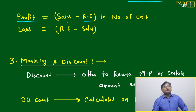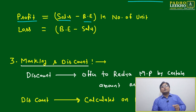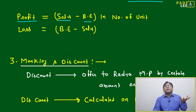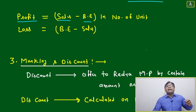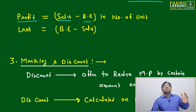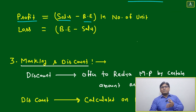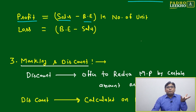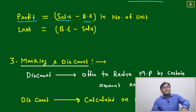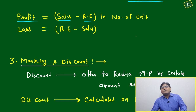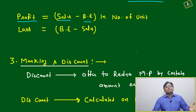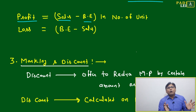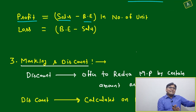Profit equals actual sales minus break-even. For example, if your actual sales are 150 units and your break-even was 85 units, then your profit is 150 minus 85, which is 65 units. If you want to convert that into rupees, then 65 units multiplied by the selling price of one unit gives you the profit amount.